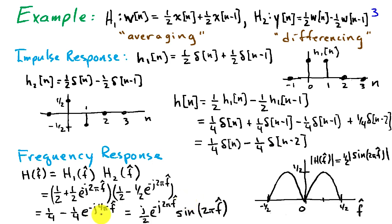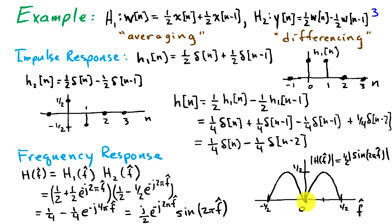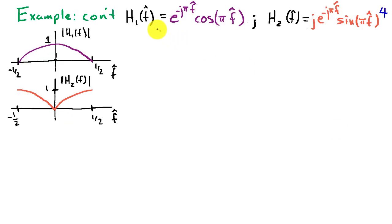If we factor out e to the minus j 2 pi f hat and a j from this expression, we can write this as j over 2 times e to the minus j 2 pi f hat times the sine of 2 pi f hat. This makes it easy to see that the frequency response magnitude is one half times the magnitude of the sine. So the frequency response magnitude is zero when f hat is zero, also zero when f hat equals plus or minus one half, and has a peak value of one half when f hat equals one quarter.